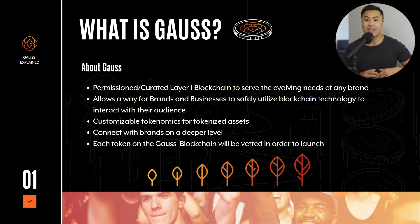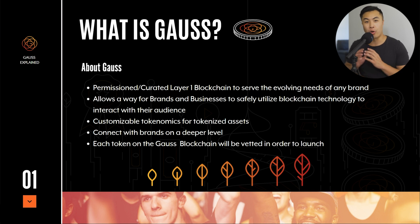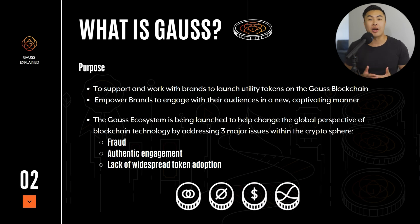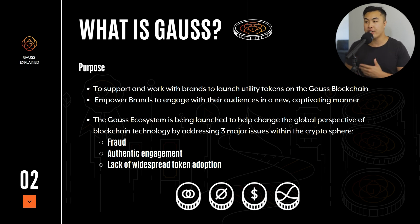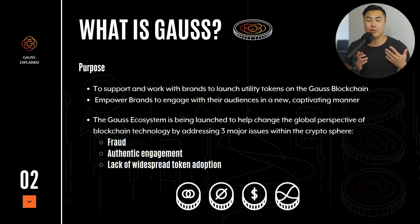The benefit of this is that there's only going to be one token per brand on that blockchain, so there's not going to be any duplicates, spam tokens, or fake tokens where people are trying to scam you. The whole purpose of Goss is to support and work with brands to launch utility tokens on the Goss blockchain. This is going to empower brands to connect with their audience in a whole different manner. The Goss ecosystem is being launched to help change the global perspective of blockchain technology by addressing three major issues: fraud, authentic engagement, and a lack of widespread token adoption.